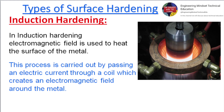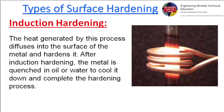Induction hardening. In induction hardening, an electromagnetic field is used to heat the surface of the metal. This process is carried out by passing an electric current through a coil, which creates an electromagnetic field around the metal. The heat generated diffuses into the surface of the metal and hardens it. After induction hardening, the metal is quenched in oil or water to cool it down and complete the hardening process.